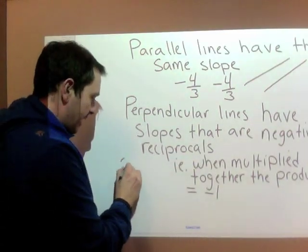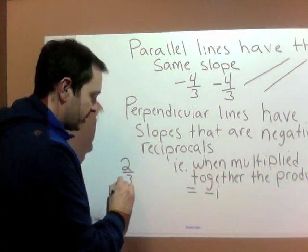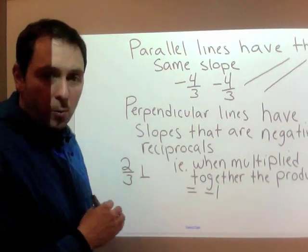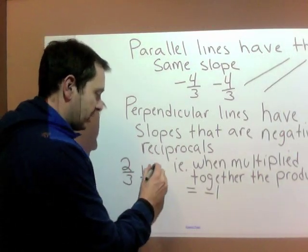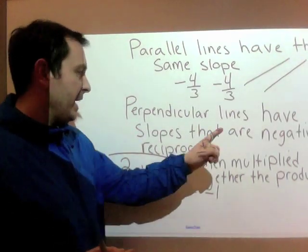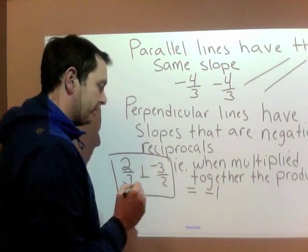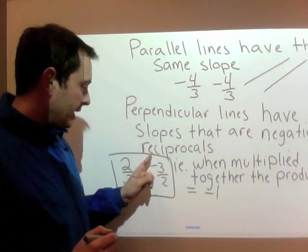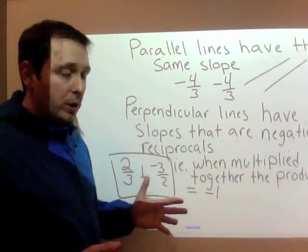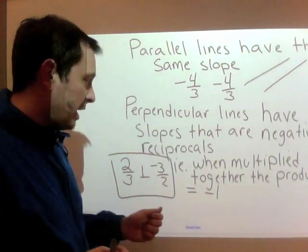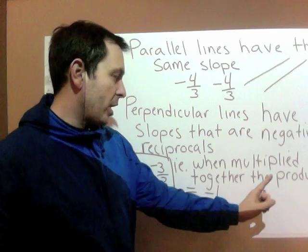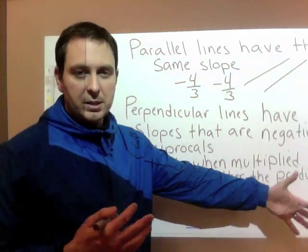So if we had two thirds as our one slope, its perpendicular line to that slope would be, first take the reciprocal which means flip the fraction, and it is a negative reciprocal. So the perpendicular slope would be negative three over two. Another way to look at this: two lines are perpendicular when their slopes, when multiplied together, the product is negative one.